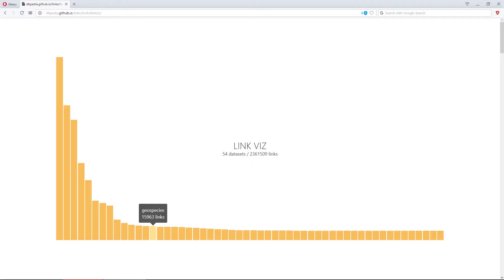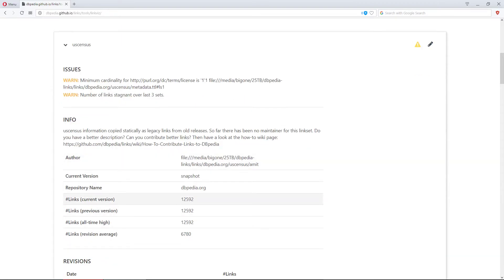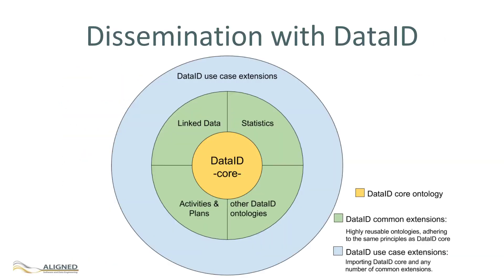The dissemination phase of the DBpedia release cycle is supported comprehensively by the extensive Data ID dataset metadata descriptions, as discussed in the video about DBpedia for deliverable 5.5.